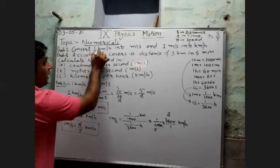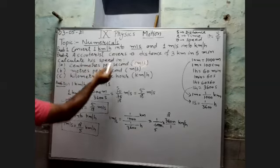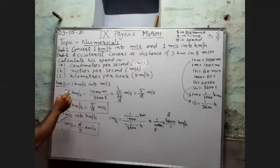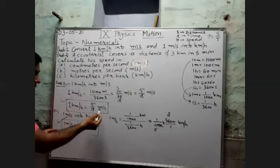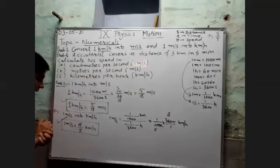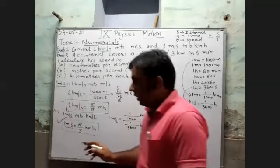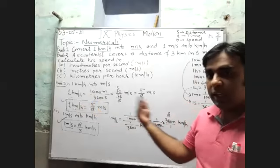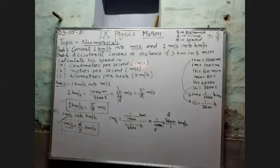These are the units of speed: kilometer per hour and meter per second. To convert kilometer per hour into meter per second, multiply by 5 upon 18. To convert meter per second into kilometer per hour, multiply by 18 upon 5. Take a screenshot of these two standard formulas.